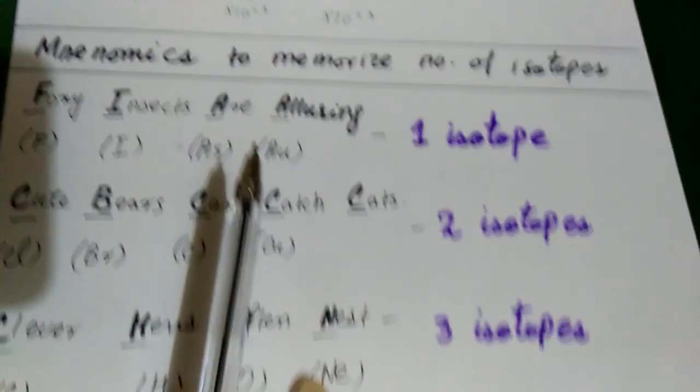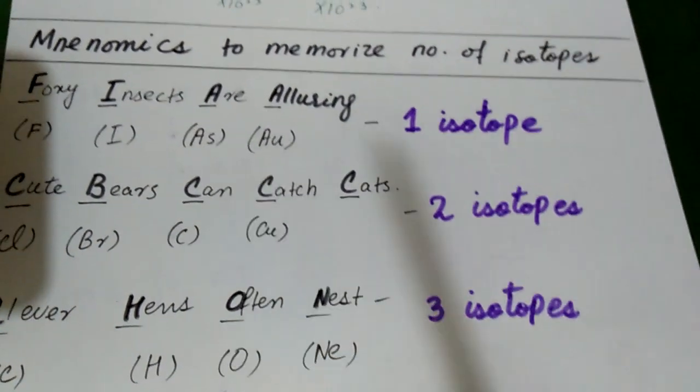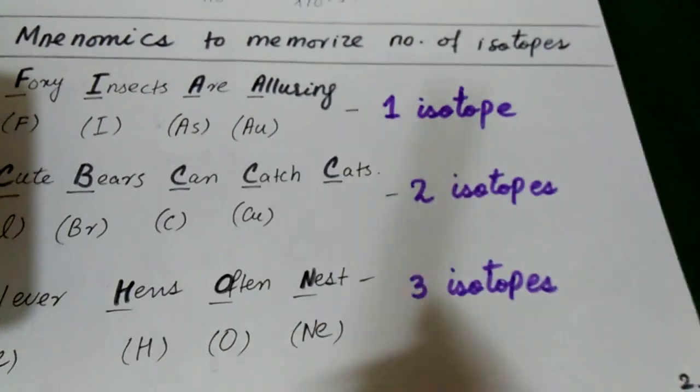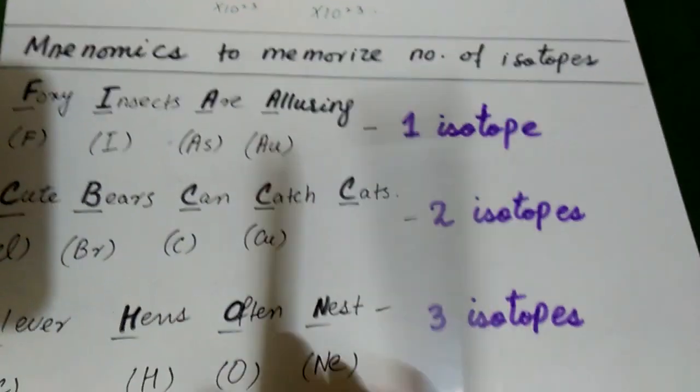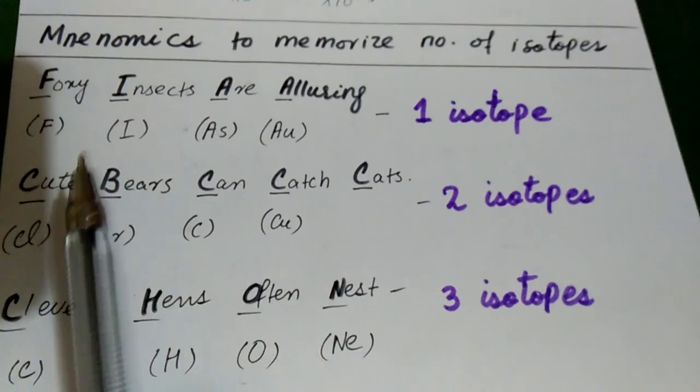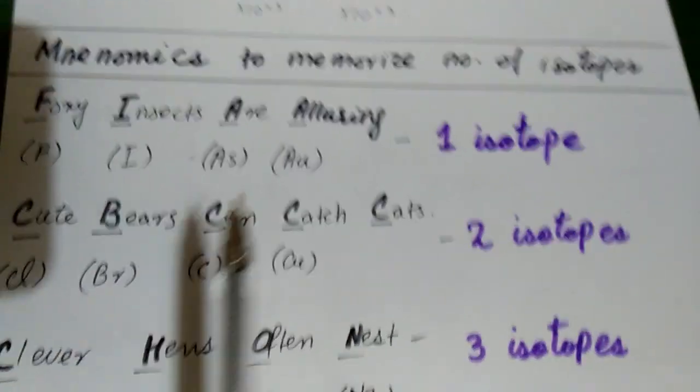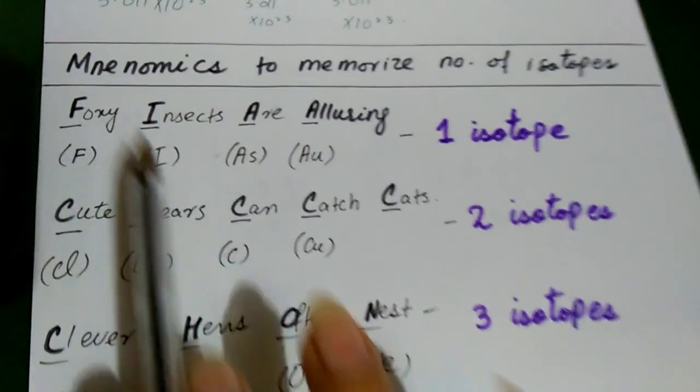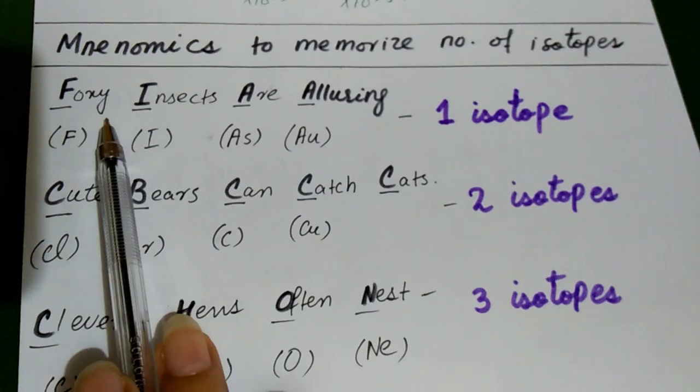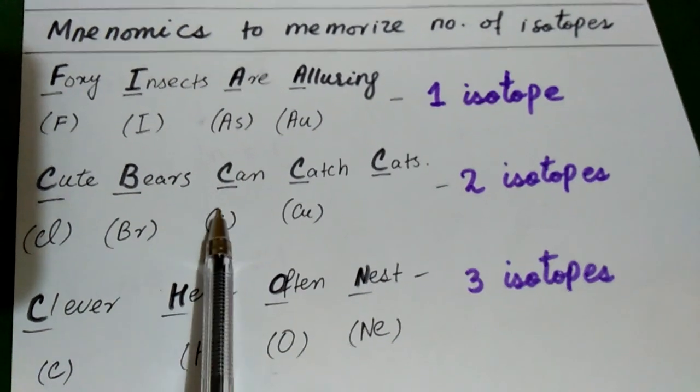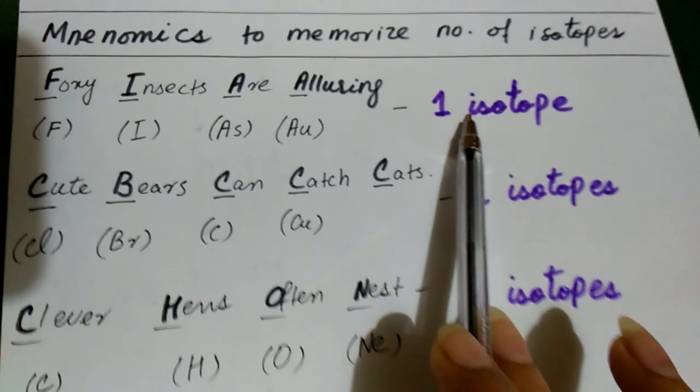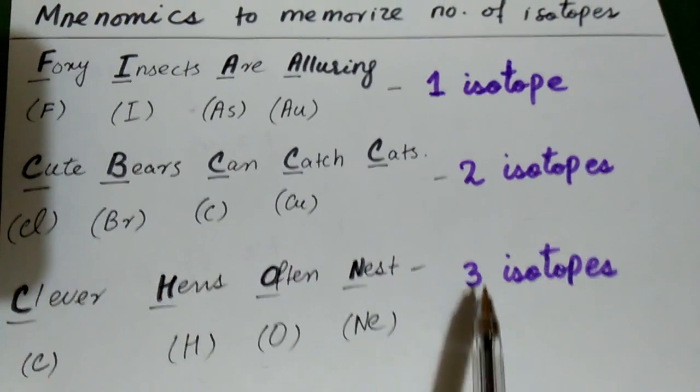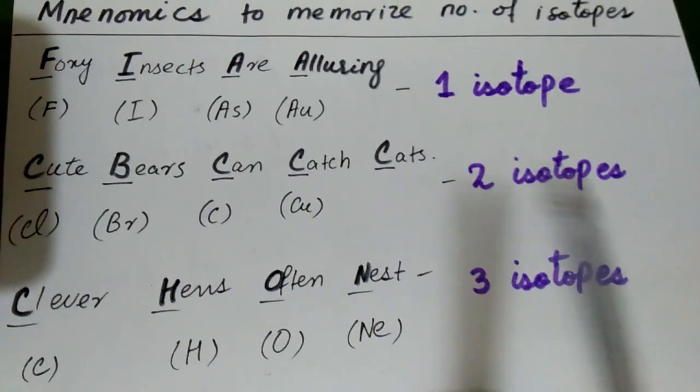After that, our chapter in this record is very important from MCQs point of view: the number of isotopes. So we have made it in mnemonics to learn this in a very easy way. So remember, Fox bear and hen. And we need to learn these little sentences. First of all, one isotope. Second, two isotopes, and third, three isotopes.